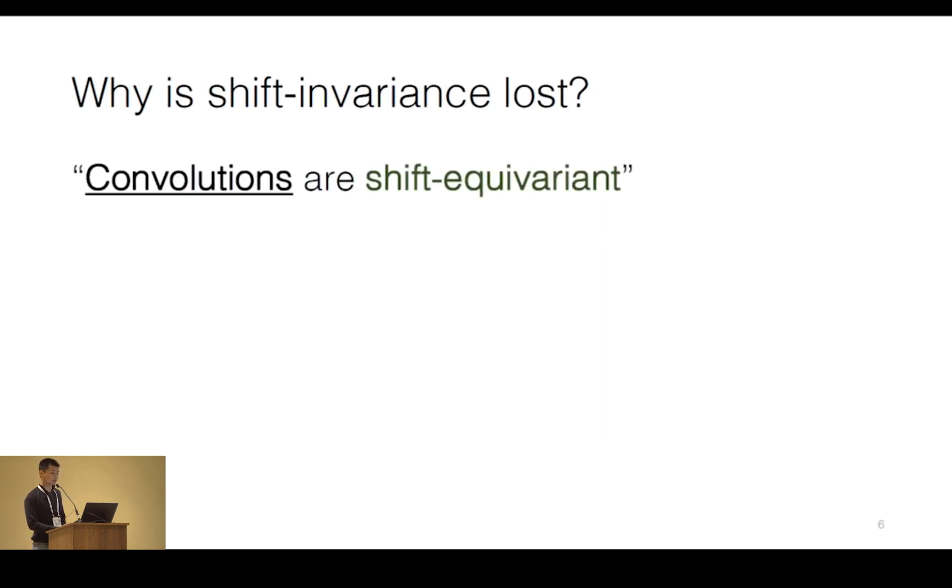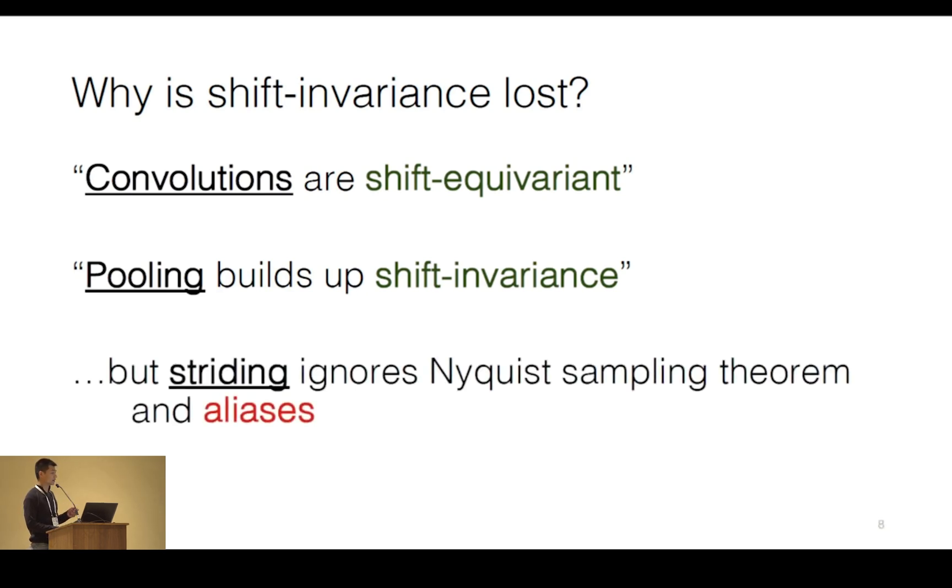After all, we've heard this mantra many times: convolutions are shift-equivariant. That is, the features should be moving with the image. And pooling builds up shift invariance, giving it a little bit of spatial slack. What we'll see is that downsampling, or striding, ends up ignoring the Nyquist sampling theorem and aliasing. Now, striding can be in both convolutions and in pooling, but we'll first start off with an example in pooling.